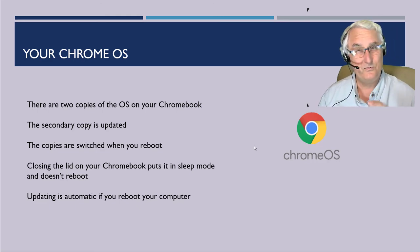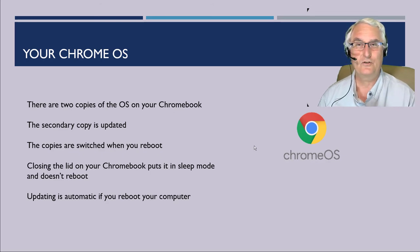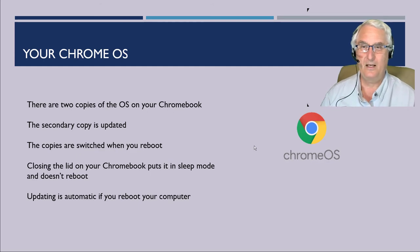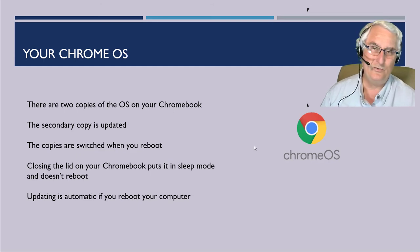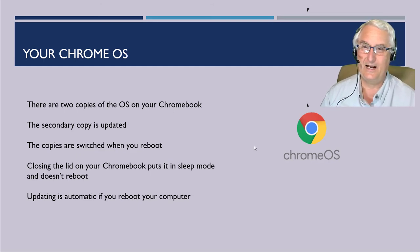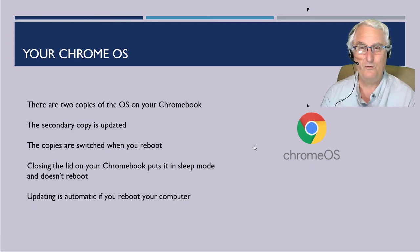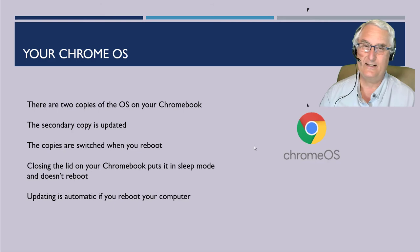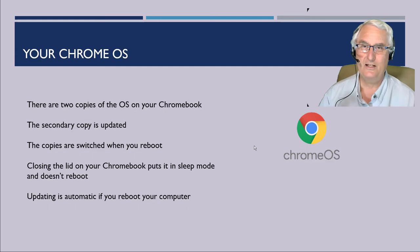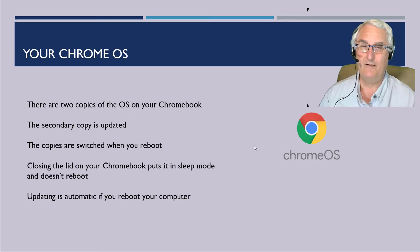How do they switch copies when you're not looking? That's when you turn your machine off — that's called a reboot. Now if you do like I do, at the end of the day you just close the lid on your Chromebook. This just puts it into sleep mode and it will never update. You actually have to turn the machine off for it to reboot and have the new version of the operating system installed.